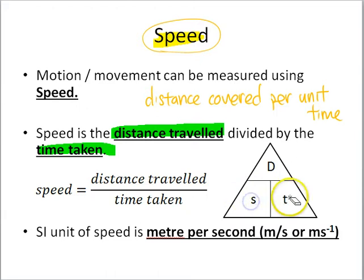This formula can also be, let's say for example, I want to find time. I'll cancel out my time, cover using my thumb or whatever. Then to find time, it is distance divided by speed. To find time, we take the distance divided by speed.